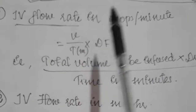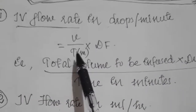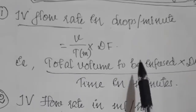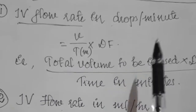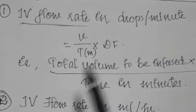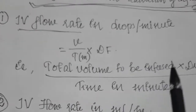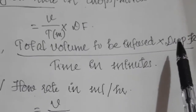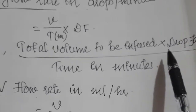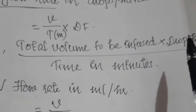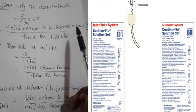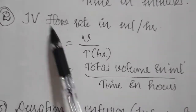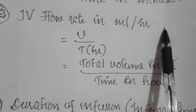IV flow rate in drops per minute is equal to V divided by T, multiplied by drop factor. V means total volume to be infused — the total amount of fluid we need to administer to our patient — divided by time in minutes, multiplied by drop factor. Drop factor is a calibration of how many drops the tubing delivers equal to 1 mL of fluid, and it may vary according to each IV tubing set.